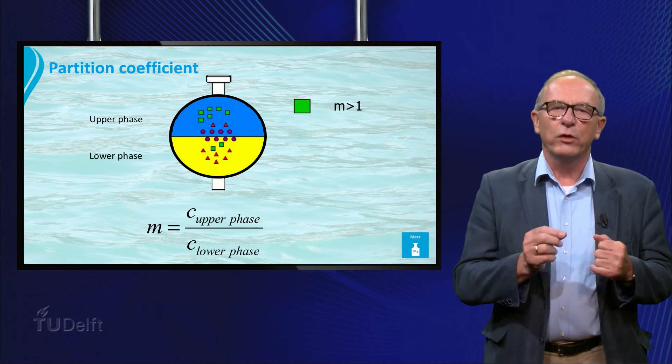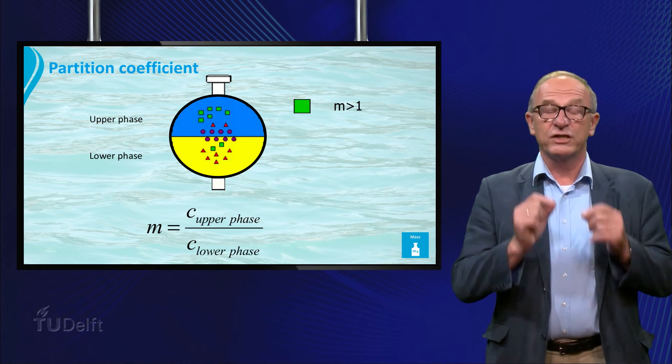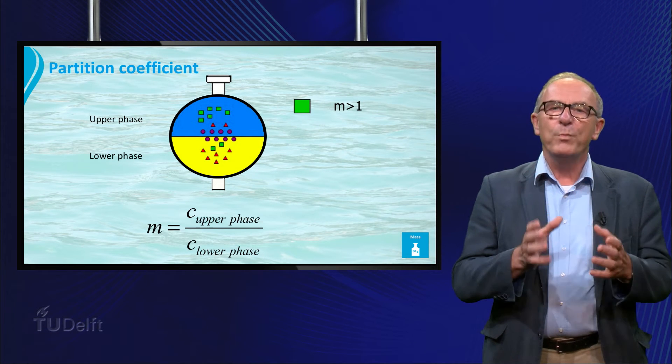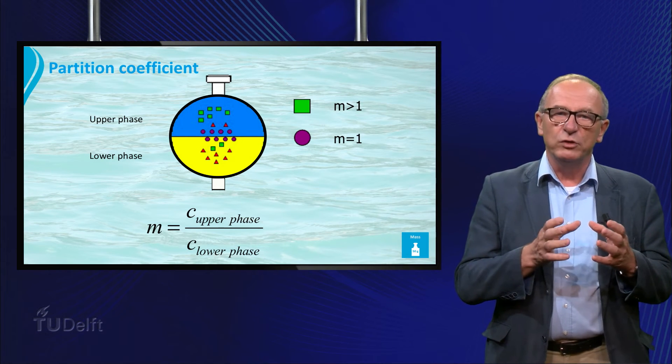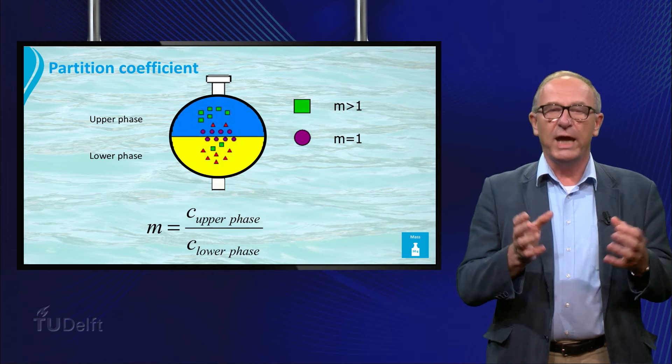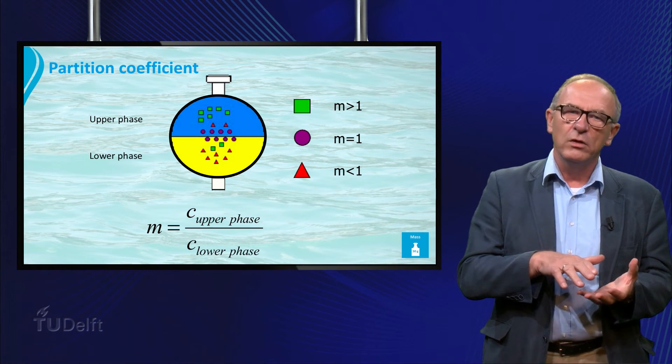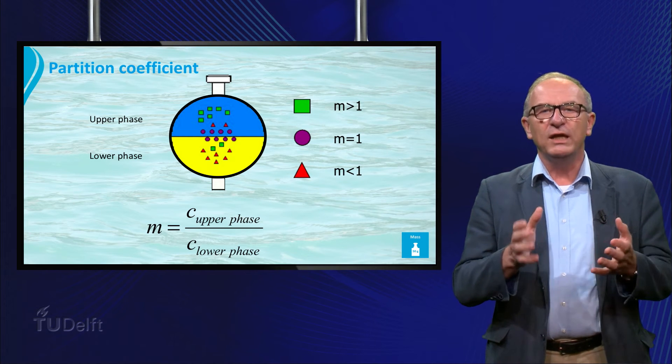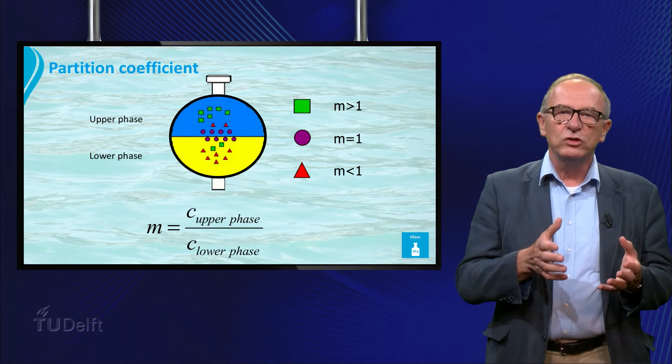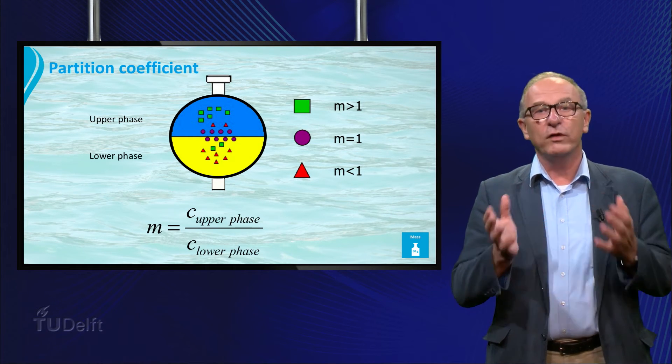The green particles prefer the upper phase and m is larger than 1. The purple particles are equally distributed and m is equal to 1. And the red particles prefer the lower phase and m is smaller than 1. So the value indicates the distribution of a certain component over the phases.